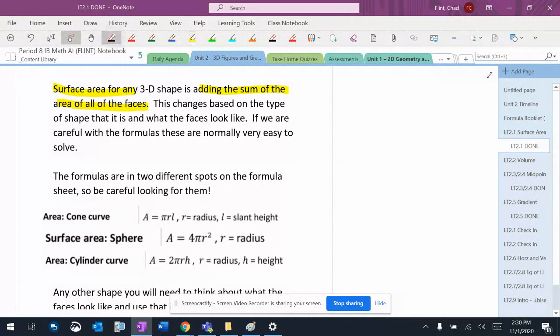You get three formulas: the cone, the sphere, and the cylinder formula. What it means by curve is you've got a cone right there—it means just the outside, not the bottom.